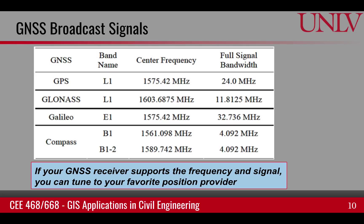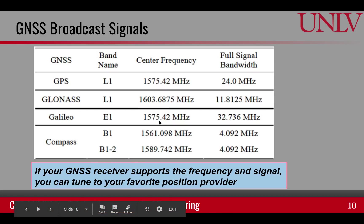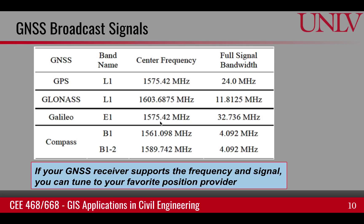Just like any radio, there are certain frequencies — and I don't expect you to memorize this, but it's here so that you understand the idea. When you tune to your FM radio on your drive to school, you tune the frequency to get a certain channel. In a similar manner, these different GNSS systems broadcast their signals at different frequencies. If you want to receive a frequency, all you have to do is tune your receiver to it, and you can receive the positional information from these different navigation satellite systems.